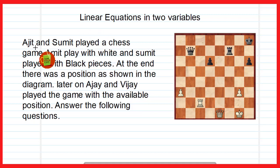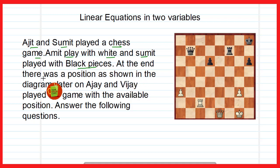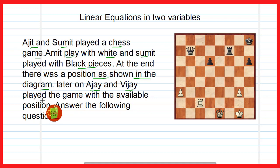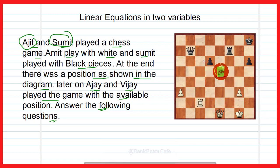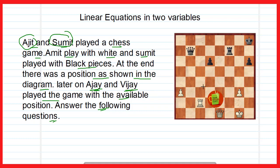Today's question: Ajit and Sumit played a chess game. Ajit played with white and Sumit played with black pieces. At the end of their game, the position was on the board as shown in the diagram. Later, Ajay and Vijay played the game with the available position. Ajit and Sumit both started playing, and after some time a position was left on the chess board as shown in the figure. Ajay and Vijay joined and played the remaining part.